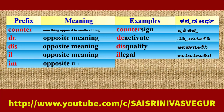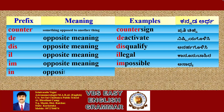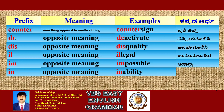Prefix 'Im': its meaning is 'opposite'. Example: Impossible. Kannada meaning: Asadhyan — not possible. Prefix 'In': its meaning is also 'opposite'. Example: Inability. Kannada meaning: Asamartate — lack of ability.